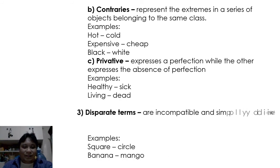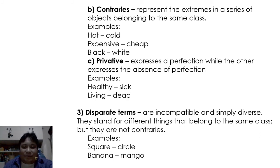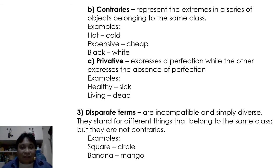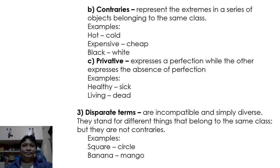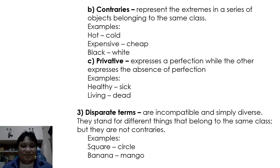Disparate terms are incompatible and simply diverse — they stand for different things belonging to the same class but are not contraries. For example: square and circle belong to the same class 'shape,' but are not contraries — they are simply diverse. Banana and mango belong to the class 'fruit.' Blue marlin and shark both belong to the class 'fish.' These are disparate terms.